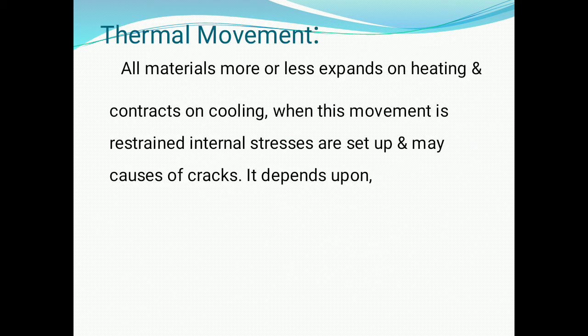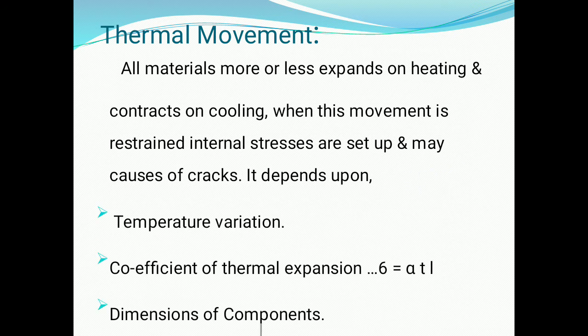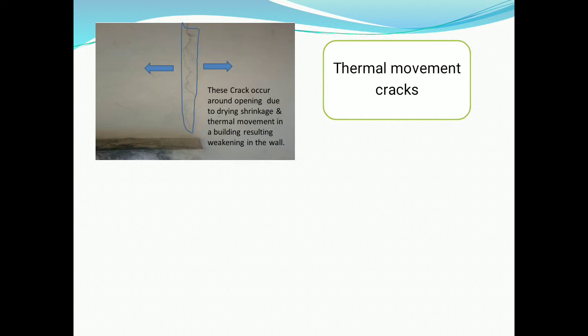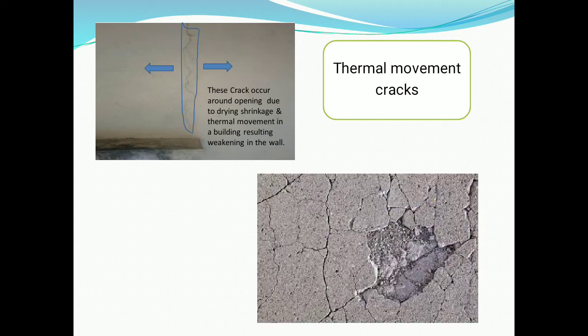Thermal movement: all materials more or less expand on heating and contract on cooling. When this movement is restrained, internal stresses are set up and cause cracks. It depends on temperature variation, coefficient of thermal expansion (alpha T L), and dimensions of the component. Thermal movement cracks occur around openings due to drying shrinkage and thermal movement of the building.